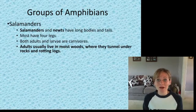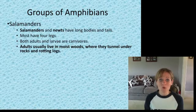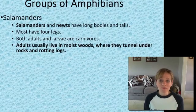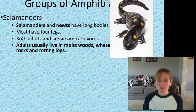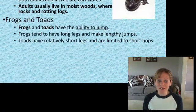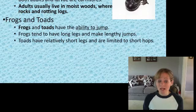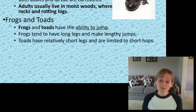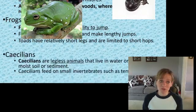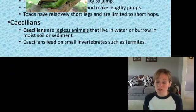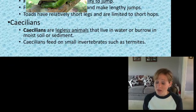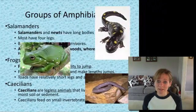Groups of amphibians: salamanders and newts are characterized by long bodies and tails, four legs, and usually live in moist woods. Frogs can jump and have long legs; toads are a bit different with short legs. Caecilians are legless amphibians that live in water and can burrow in moist soil and sediment.